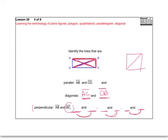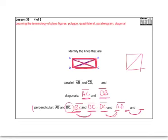We already did AB perpendicular to BC. Now working around: BC is perpendicular to CD, so write BC perpendicular to DC. Then DC down at the bottom is perpendicular to AD, so write DC perpendicular to AD — don't forget your segment symbols. And the last one: AD on the side is perpendicular to AB on the top, so write AD perpendicular to AB. Those are tricky.